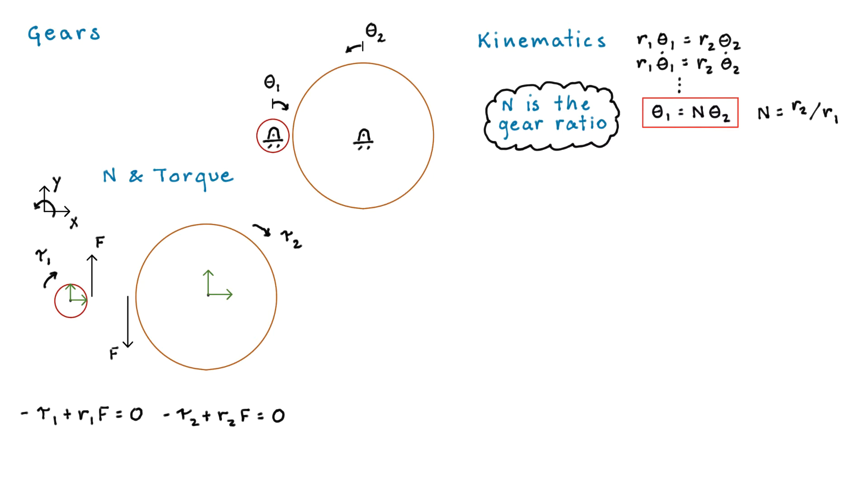We get a similar thing for gear 2. And now what I'll do is just resolve out the F, or solve for the F, in the gear 1 equation. So that's tau 1 over r1, and stuff it into the gear 2 equation. And then solve for tau 2. And we can see that that's just equal to n times tau 1.